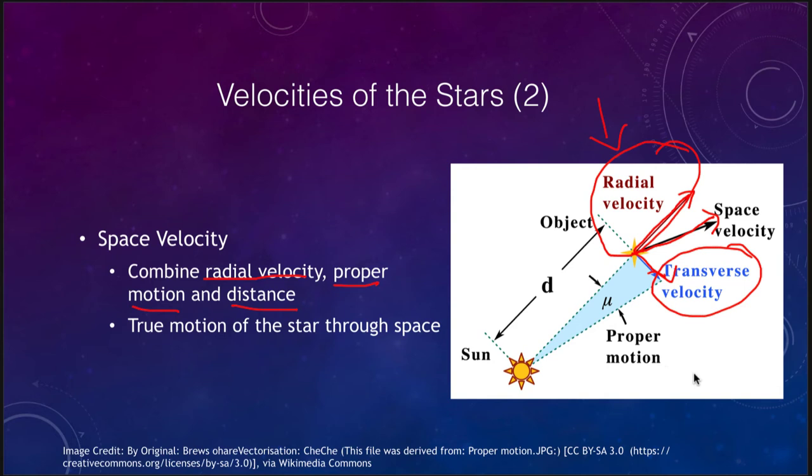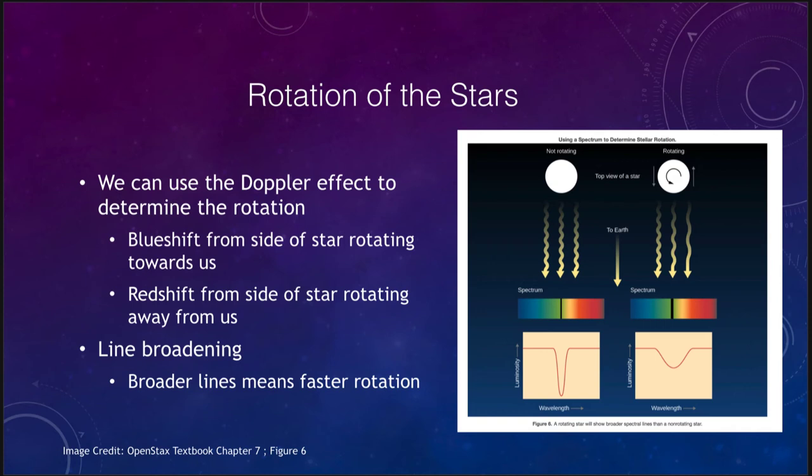The radial velocity is a lot easier to get because we just have to make a direct measurement. The transverse velocity can take time — we need to look at images sometimes decades or even a century apart to be able to see how that star has been moving. But together, those will give us the true space velocity of a star through space.